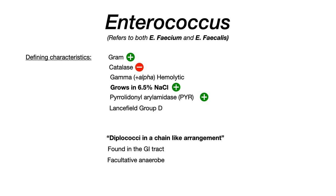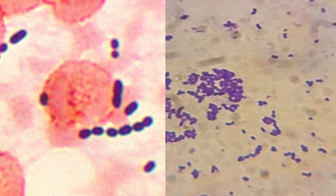Two things to focus on from this: first, that enterococcal species grow in 6.5% salt, which is critical for differentiating them from non-enterococcus. Second, the description — diplococci in a chain-like arrangement. If you see images showing that morphology, start thinking enterococcus.